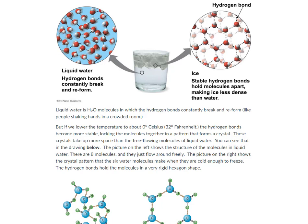But if we lower the temperature to about 0 degrees Celsius, or 32 degrees Fahrenheit, those hydrogen bonds become more stable, locking the molecules together in a pattern that forms a crystal. These crystals take up more space than the free-flowing molecules of liquid water, as you can see in the following drawing.